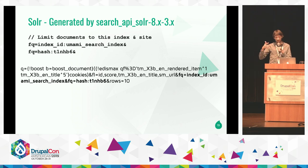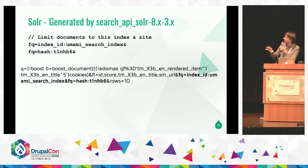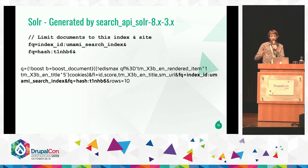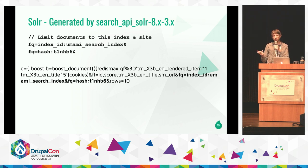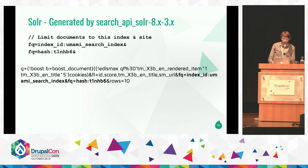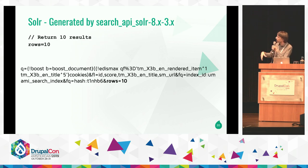Search API Solr allows you to index multiple items or the same item multiple times in different indexes within the same Solr core. You can limit results to a specific index using a hash — even if you add all content in one Solr core for development, staging, and production, you can limit it per site and environment. The best practice is to have separate cores. At the end, we ask to return 10 results.